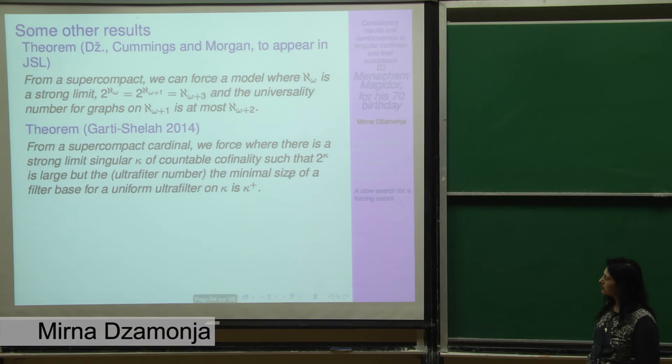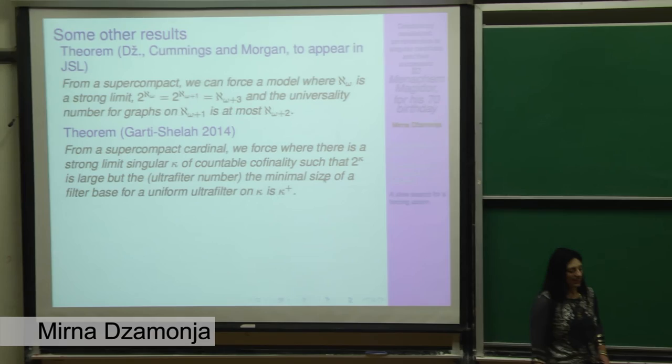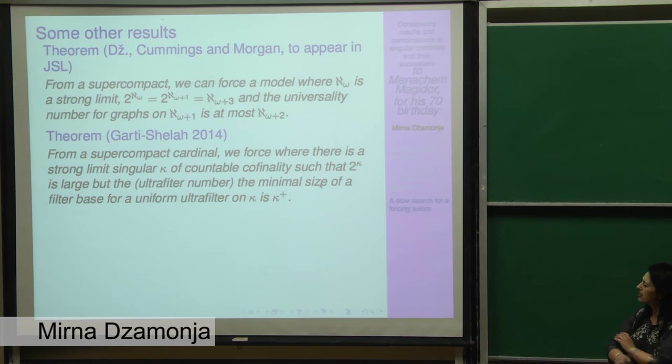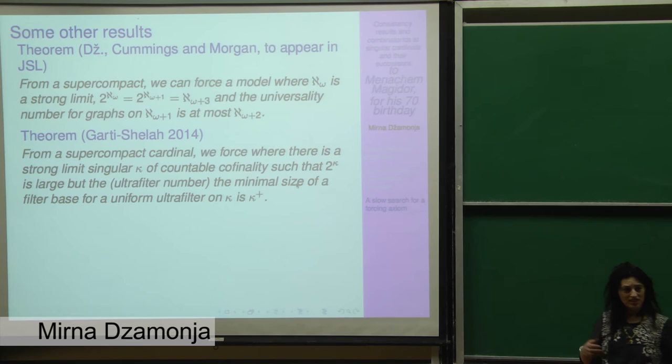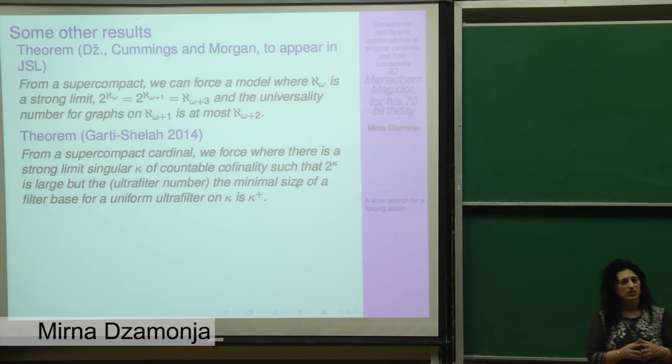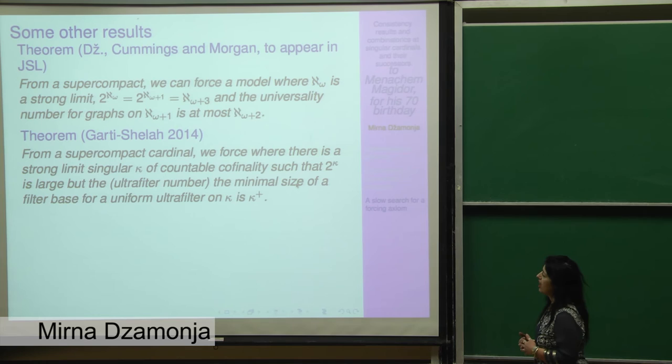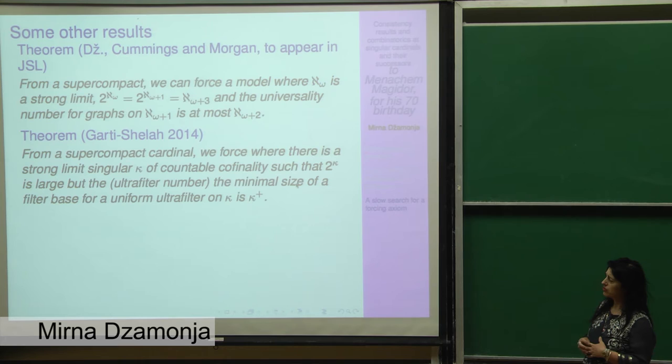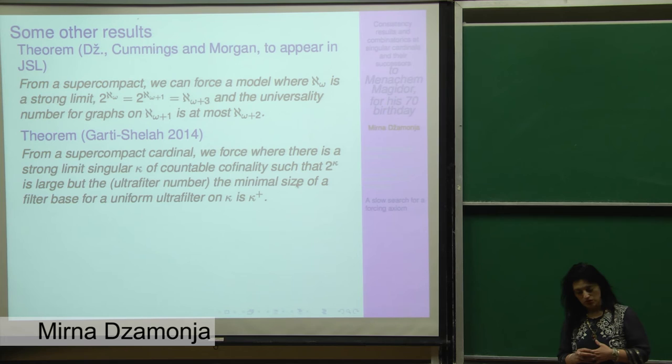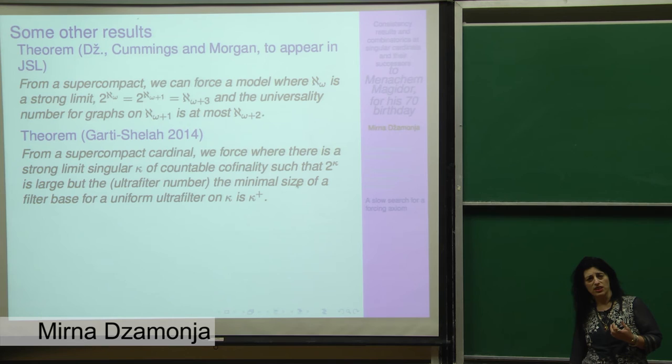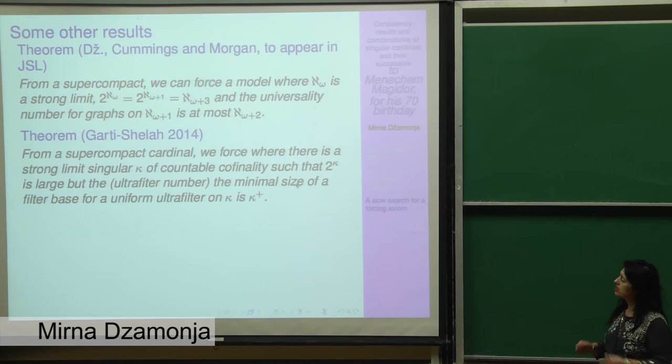So let's see some other results. Here is a more recent result, it's due to Garty and Shelah. This goes back to our original paper with Shelah. They wanted to see if something else can be said combinatorially in that kind of model. So it is actually the same kind of model with the prickly forcing. So there is an iteration, then there is a prickly forcing at the end. What they considered is the minimal size of a filter base for a uniform ultrafilter on kappa. So a filter base means that you have a family of elements of the filter such that every element of the filter is almost contained in an element of the base. And so this is kind of a cardinal invariant.